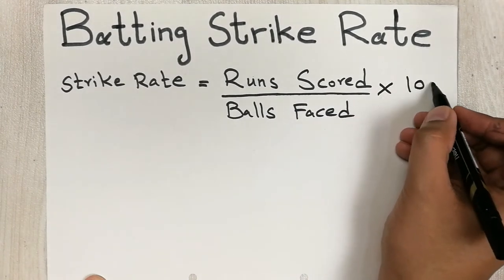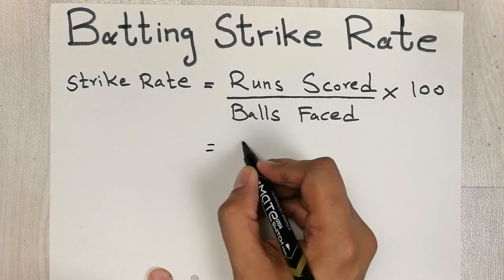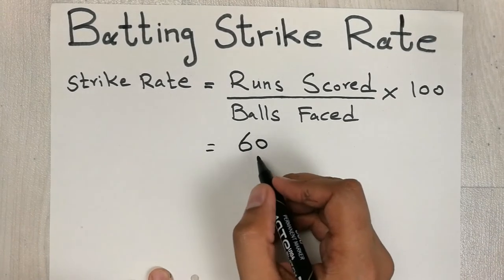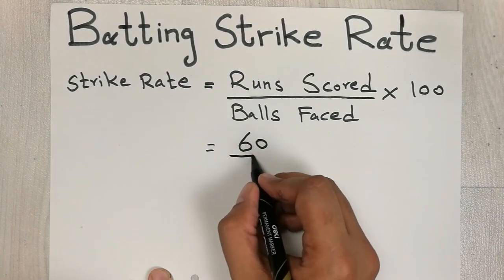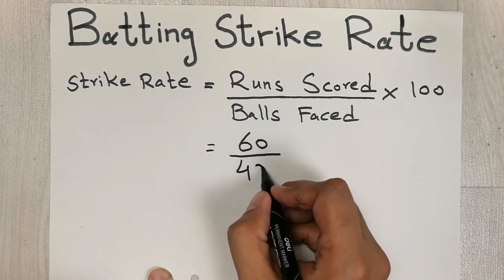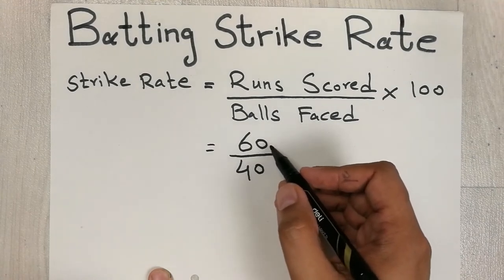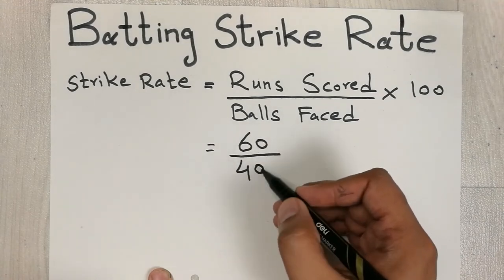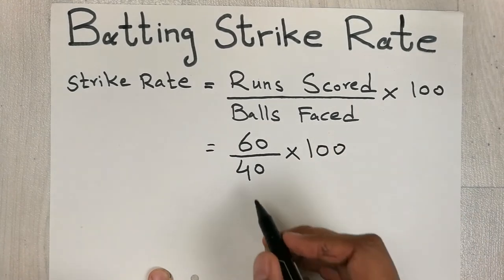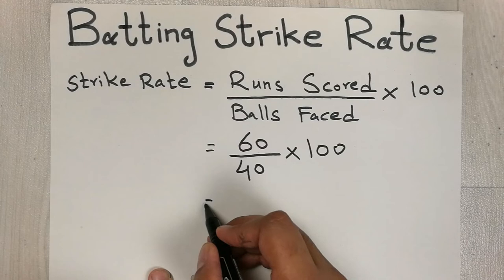For example, if you scored 60 runs off 40 balls — so you faced 40 balls and made 60 runs — we put those values into the formula: (60 / 40) × 100.